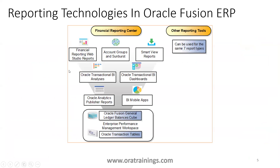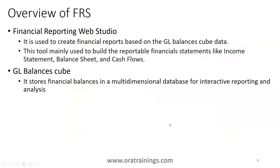On a more detailed slide, there are actually around seven reporting types. Accounting groups, sunburst, and BI mobile apps are listed as separate categories. But all of them are based on a database — financial reports are based on the Fusion General Ledger balances cube, while the other report types are based on transactional tables.